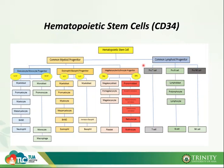Your common lymphoid progenitor gives rise to only three types of cells — your T cell, your B cell, and your natural killer cells, which will be discussed in immunology serology. Your common myeloid progenitor gives rise to all your granulocytes, monocytes or macrophages, erythrocytes, and most importantly, your megakaryocyte, which will also produce your platelet.